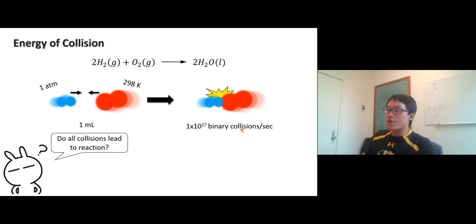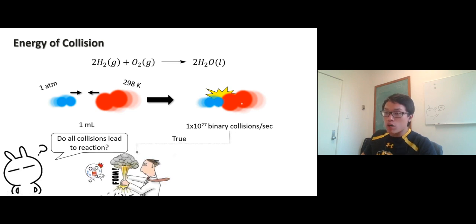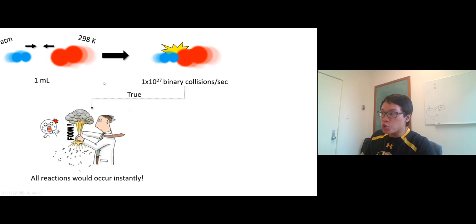If you have this condition, there will be 10 to the 27 collisions per second. That's a lot. Remember Avogadro's number is 6.02 times 10 to the 23rd. This is even higher than that. If all collisions led to reactions, all reactions in this world would occur instantly. That would make sense because there are too many collisions.